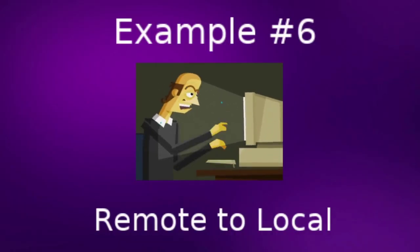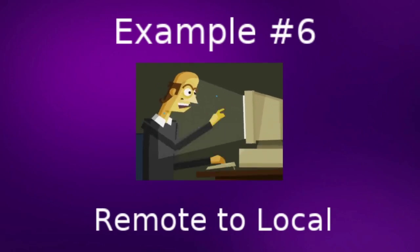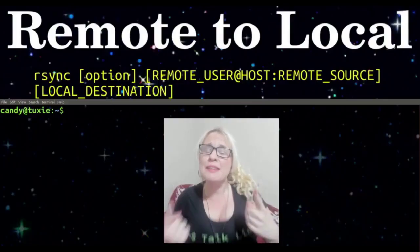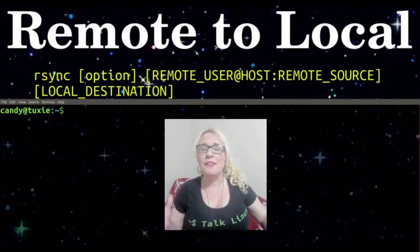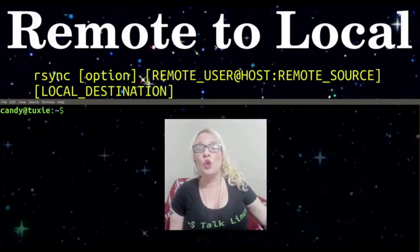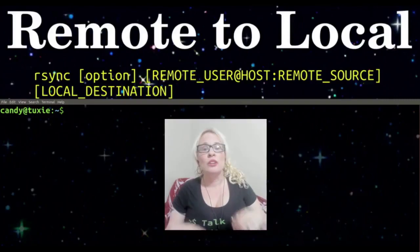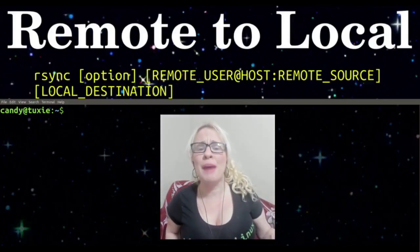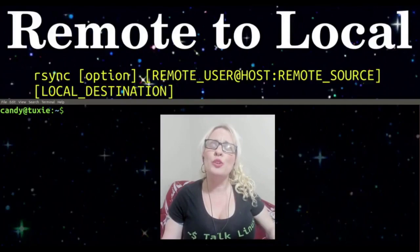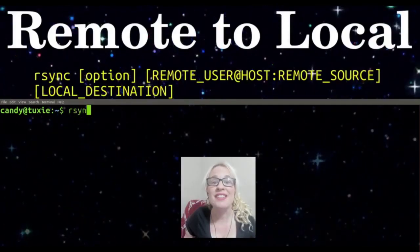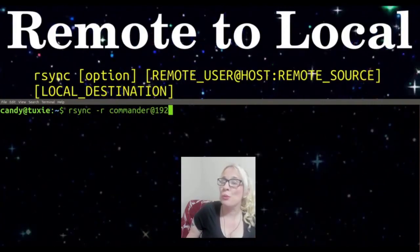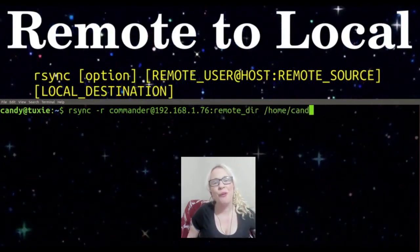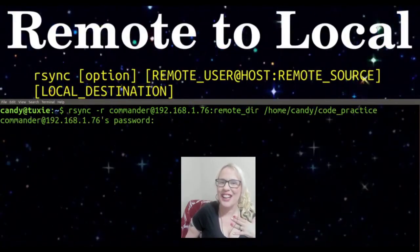Six is my favorite number, and for example six, we are going to transfer an entire directory remote to local. Again, as you can see, the basic command configuration is just about the same every time. When we did local to remote, we expanded our destination. Going remote to local, we are going to expand our source. The source is formatted as remote user at host colon remote source. In this example, we're taking a directory called remote_dir on commander's remote server and transferring a copy of it to our local machine inside our code practice directory.